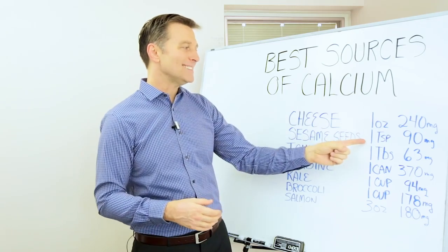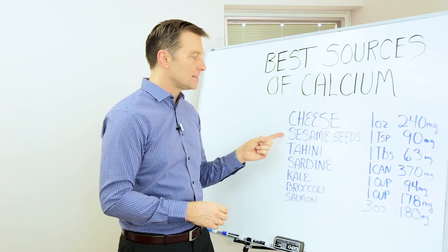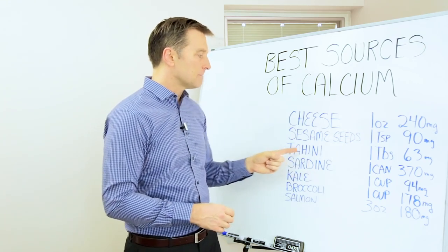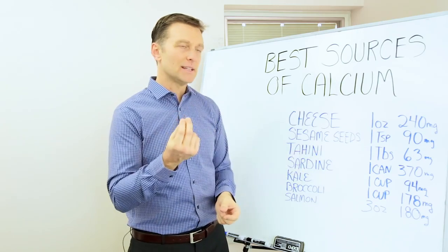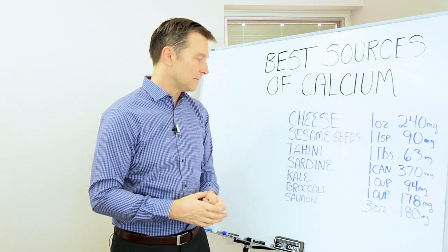Sesame seeds, one tiny little teaspoon is 90 milligrams. Tahini, that's sesame seed butter. You can get this from any grocery store. This is very bland. It's kind of like peanut butter, but I would mix it. Look at that. One tablespoon is 63 milligrams of calcium.